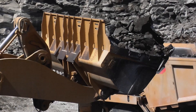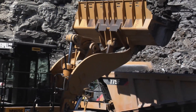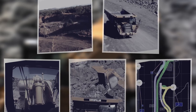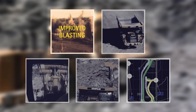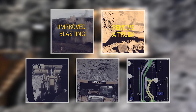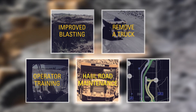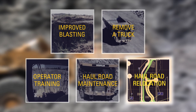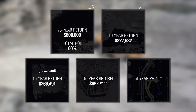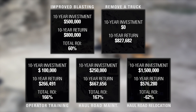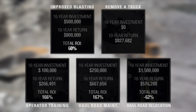A full financial and business case analysis is now complete, ensuring that the five exemplary changes shown will drive business returns to the operation. They include improved blasting, removing a truck, operator training, haul road maintenance, and haul road relocation. Each option was then weighed and calculated based on unique returns to that customer's operation, and the returns on investment vary based on the amount of work required to realize the gain.